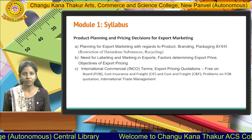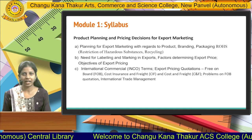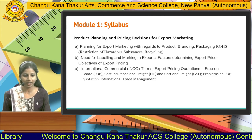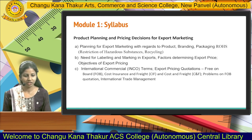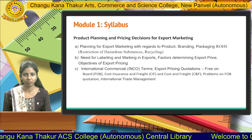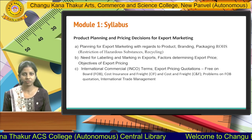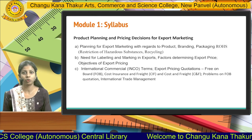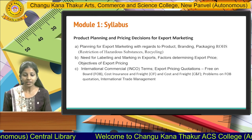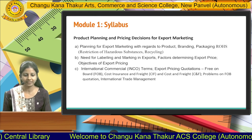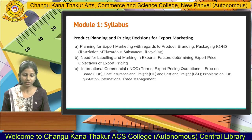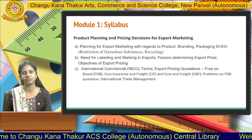This is the syllabus of module number 1 regarding product planning and pricing decision for export marketing — what is planning, what is branding, what is ROH, what is the need of labeling, what are factors determining export pricing, international commercial Incoterms, export pricing quotation, FOB pricing, CIF pricing, CNF pricing, and problems on FOB quotation in international trade management.